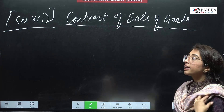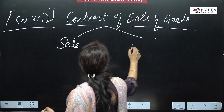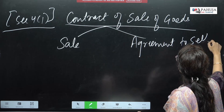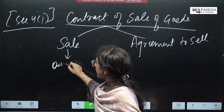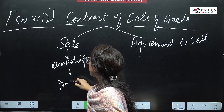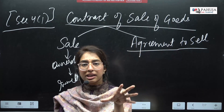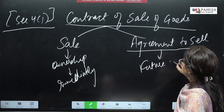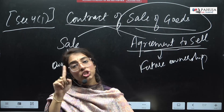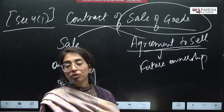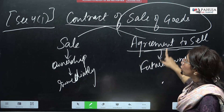Now we need to know what a contract of sale of goods is. A contract of sale of goods can be two things: sale and agreement to sell. In sale, ownership transfers immediately — you get ownership right away. In agreement to sell, you have only agreed — so ownership will come to you in the future. But both are part of SOGA.